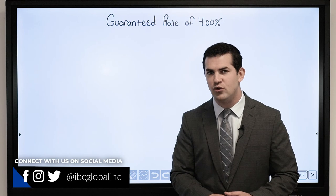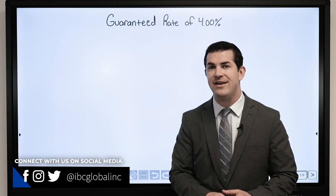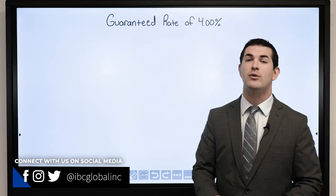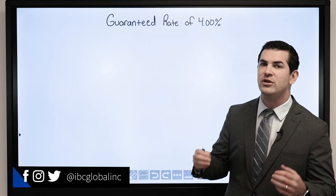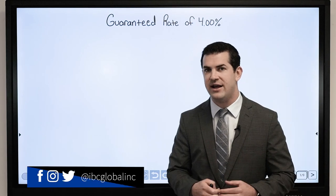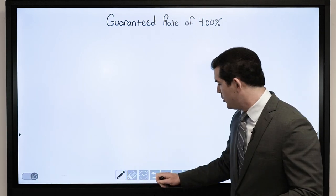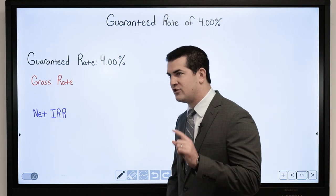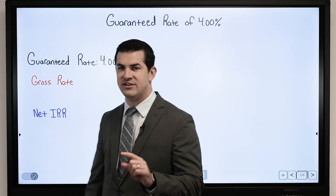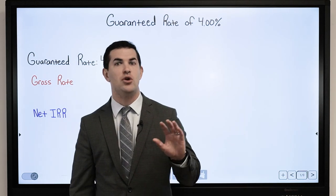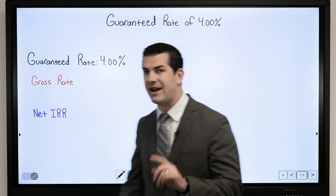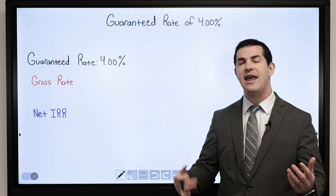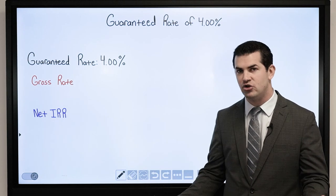So the question is: when I have a guaranteed rate of 4%, is that what I am actually earning on my cash value? When it comes to the guaranteed rate of 4%, what is important to emphasize is that it is a gross rate that is credited after the company's insurance expenses and mortality charges.